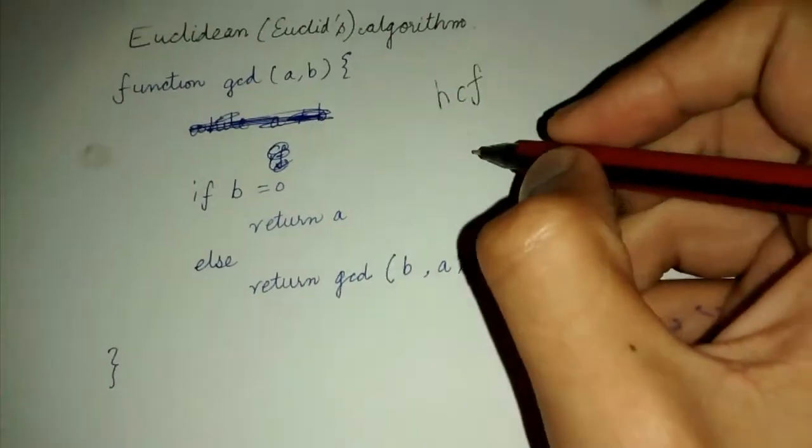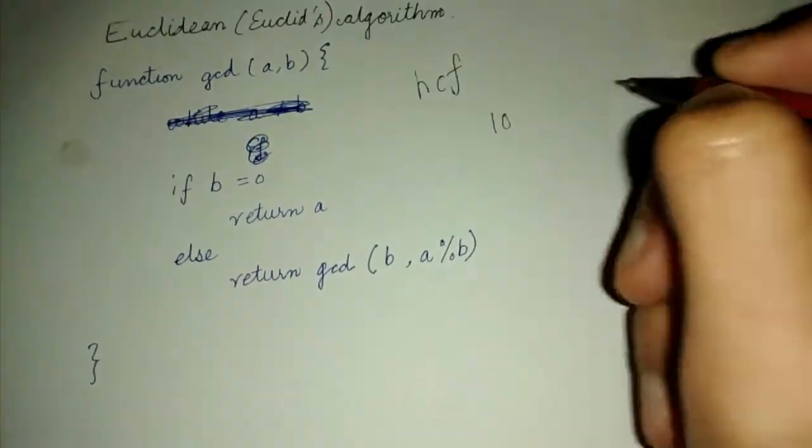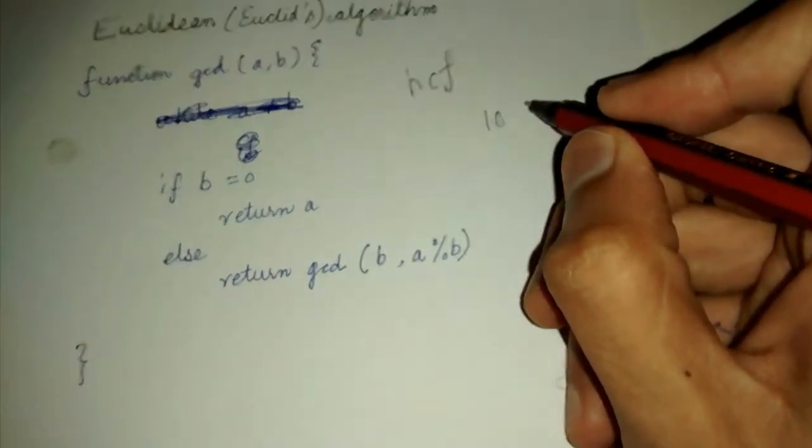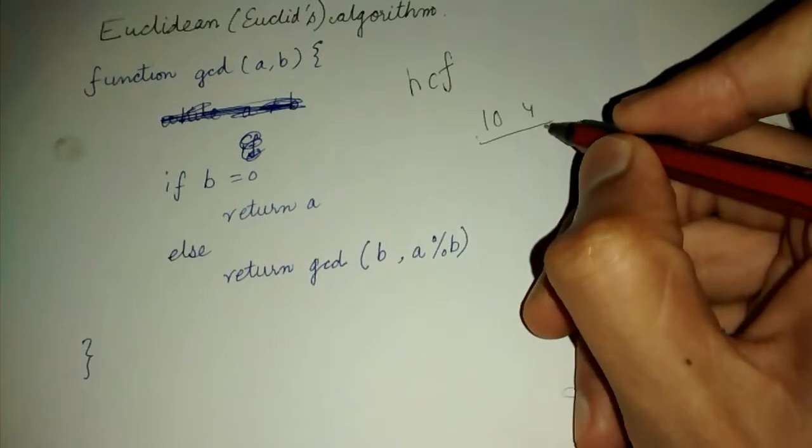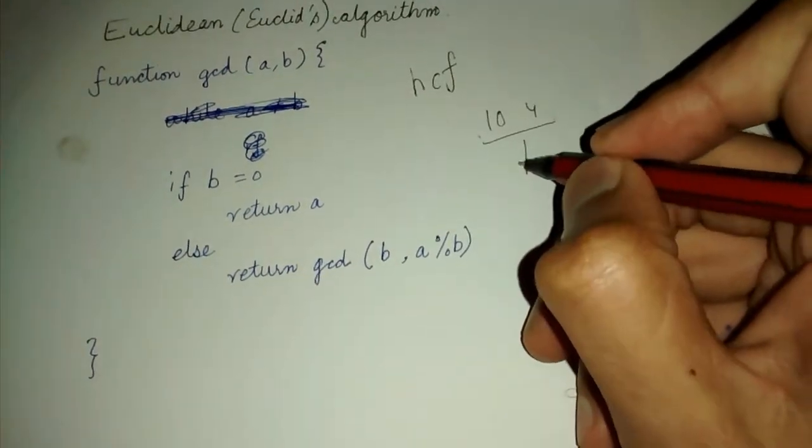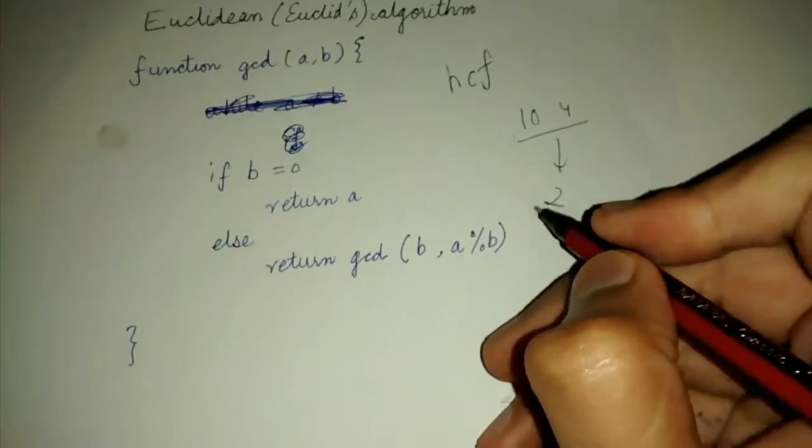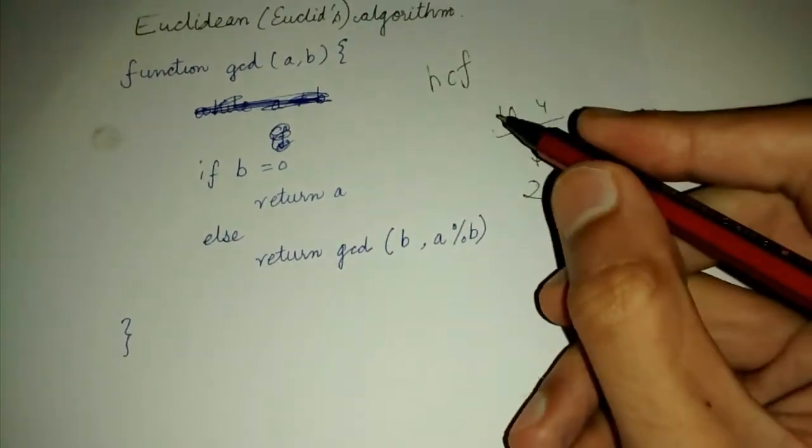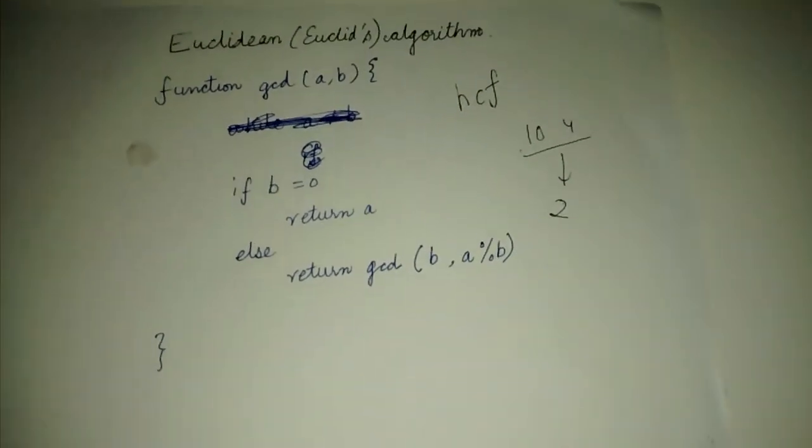So let's say we are given two integers 10 and 4. In this case the greatest common divisor is equal to 2 because 2 will divide both 10 and 4. So 10 by 2 is 5 and 4 by 2 is 2. So 2 divides both of them.